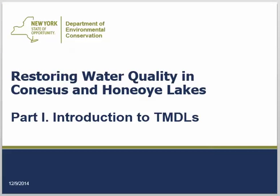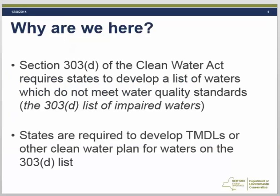The goal of Part 1 of this presentation is to provide a general introduction to TMDLs and what they seek to accomplish. The concept of the TMDL begins with Section 303 of the Clean Water Act, which requires states to maintain a list of water bodies which do not meet water quality standards. This list is referred to as the 303D list of impaired waters. Once a water body is placed on the 303D list, states are required to develop TMDLs or other clean water plans to address the impairment. The ultimate goal of the TMDL is to restore a water body such that it meets water quality standards.